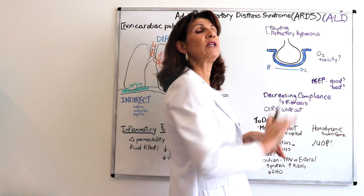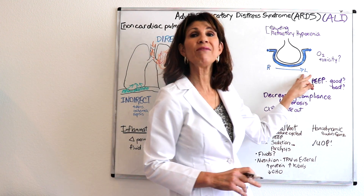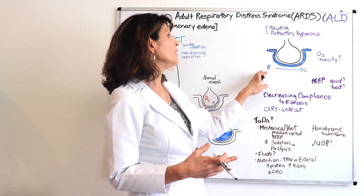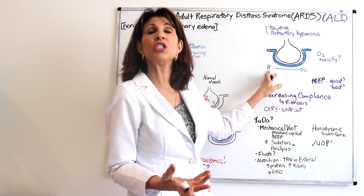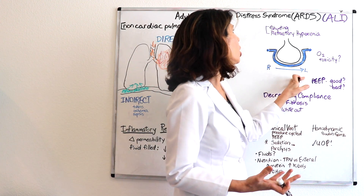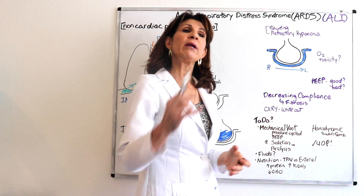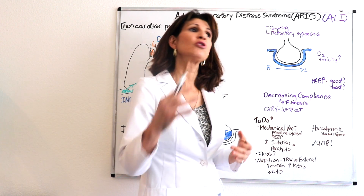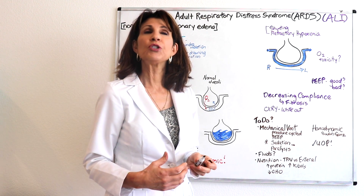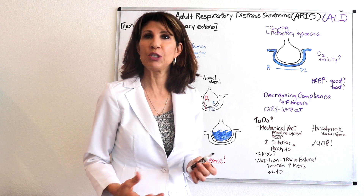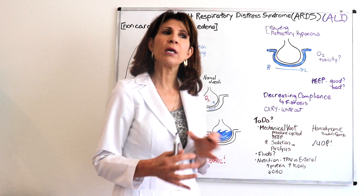As the patient becomes more and more hypoxemic, something called shunting occurs. Shunting means blood flow travels from the right side of circulation to the left without participating in gas exchange — venous blood from the pulmonary artery reaches the pulmonary vein almost unchanged in oxygenation. This produces refractory hypoxemia, where no matter how high the FiO2 goes, the PaO2 does not improve.